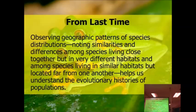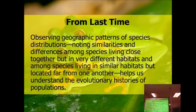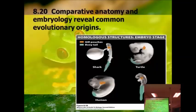The last time that we were in here, we talked a little bit about geographic patterns and species distribution — basically how different types of organisms are found in different places around the world. There are similar species that live in very different habitats, and very different habitats that have similar species, and that depends on the evolutionary history of those populations.